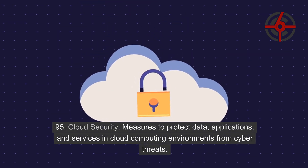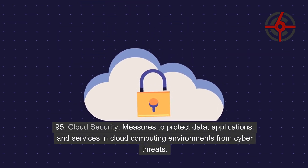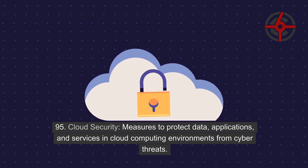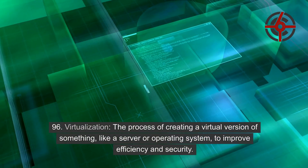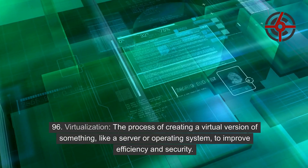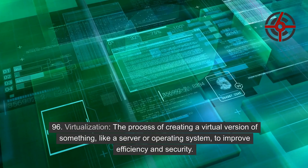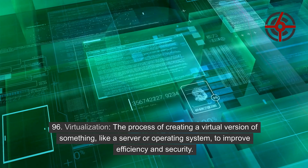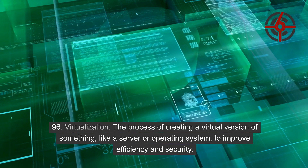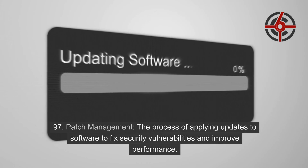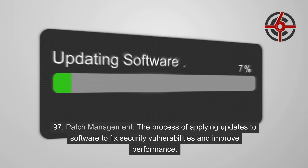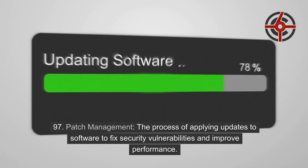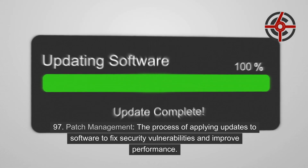95. Cloud security: Measures to protect data, applications, and services in cloud computing environments from cyber threats. 96. Virtualization: The process of creating a virtual version of something like a server or operating system to improve efficiency and security. 97. Patch management: The process of applying updates to software to fix security vulnerabilities and improve performance.